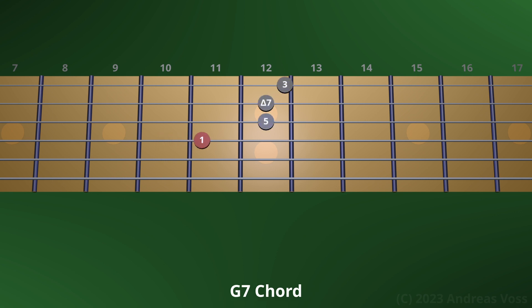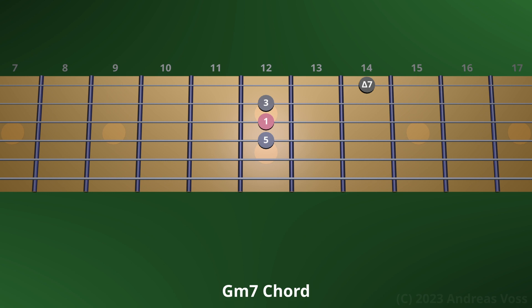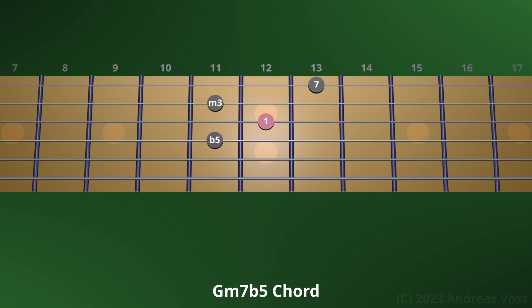Back to the dominant 7th chord. Next, let's construct the major 7th chord from the dominant 7th chord — we do this by raising the 7th to the major 7th. Finally, let's construct the minor 7 flat 5 chord. Going back to the minor 7th chord, we lower the 5th to the flat 5.